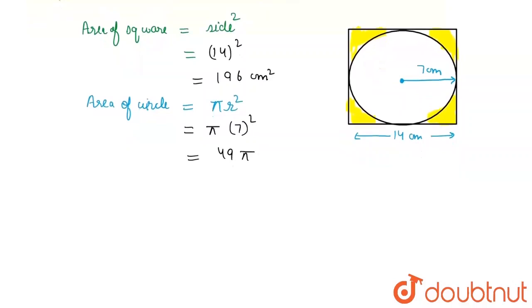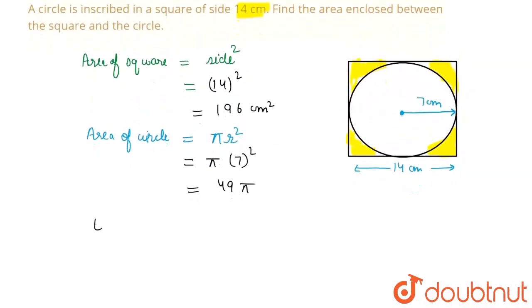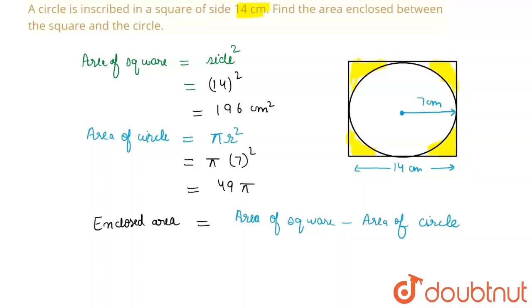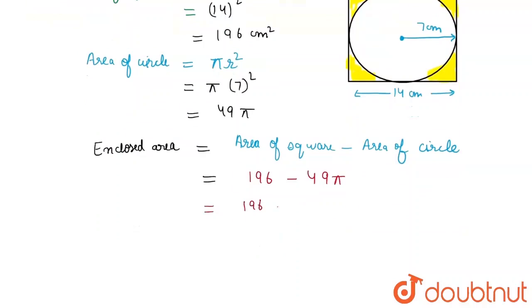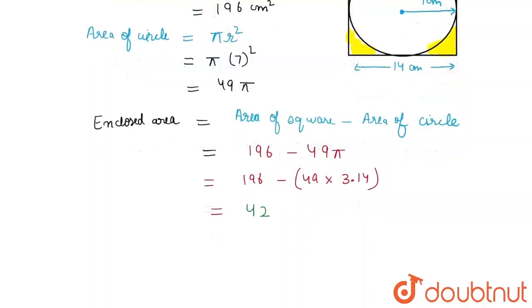The enclosed area is equal to the area of the square minus the area of the circle, which is 196 minus 49π. Using π equal to 3.14, I get the answer equal to approximately 42.4 centimeter square.